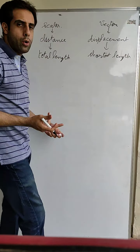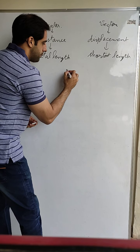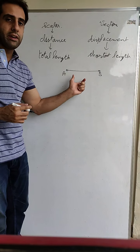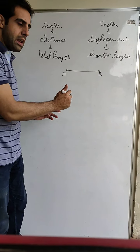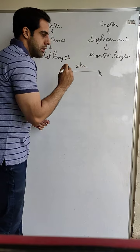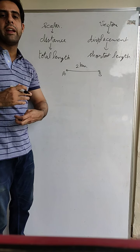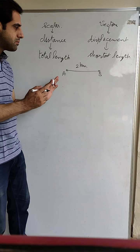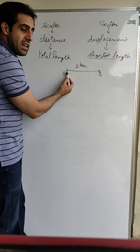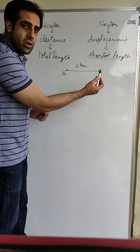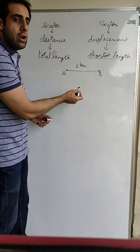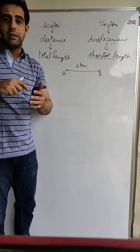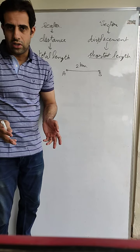Let me differentiate between the two with an example. Let a body go from point A to point B along a straight path. Suppose the distance between A and B is two kilometers. If I go from A to B, I have covered a distance of two kilometers. The displacement is also the shortest length between the initial and final point, which in this case is also two kilometers. So in straight line motion, distance and displacement are the same — there is no differentiation between them.